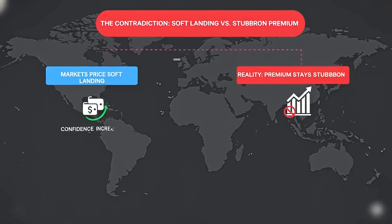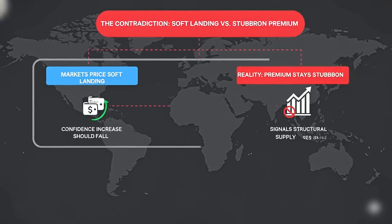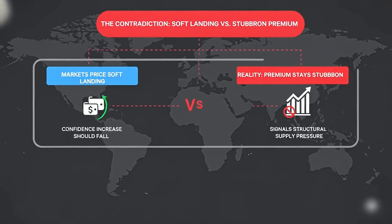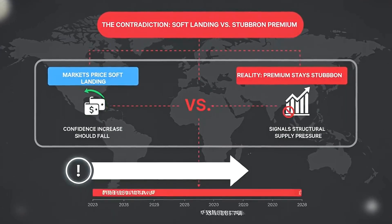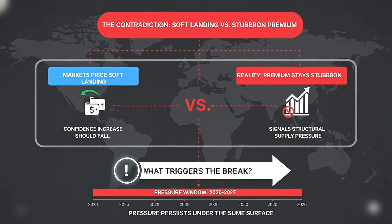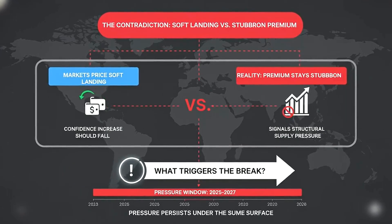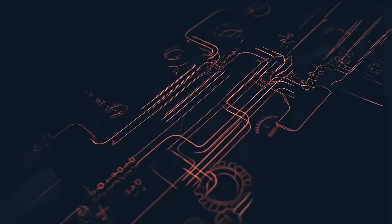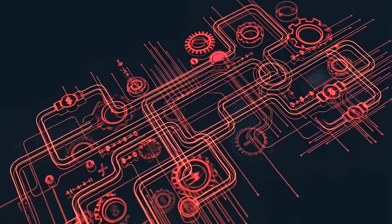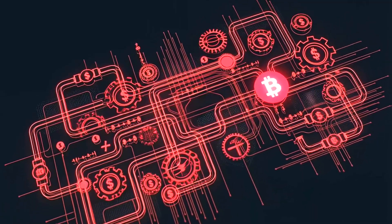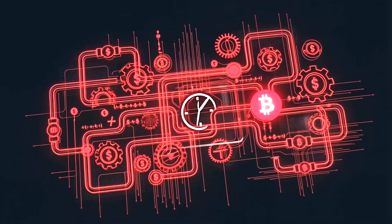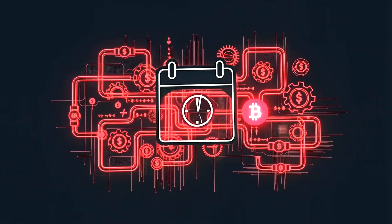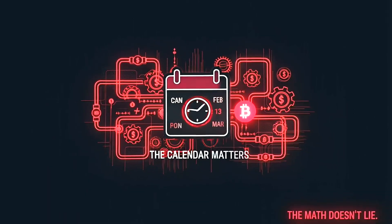Check this contradiction: markets price soft landing while term premium stays stubborn. If landing is soft, term premium should retreat on confidence. If premium refuses, it signals structural supply, not panic. That means pressure persists under the surface. The math doesn't lie.